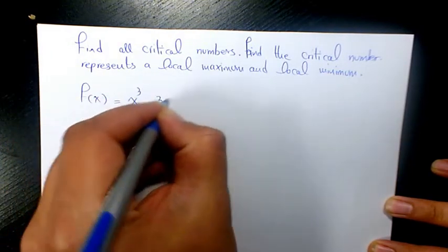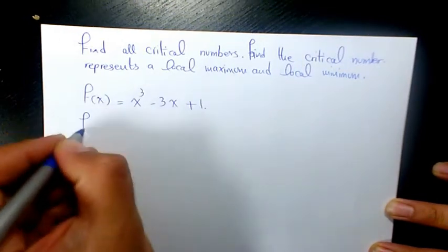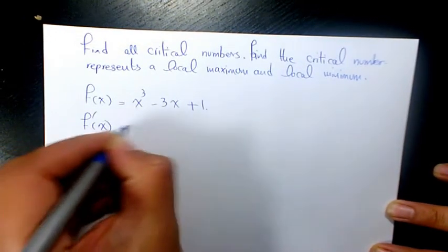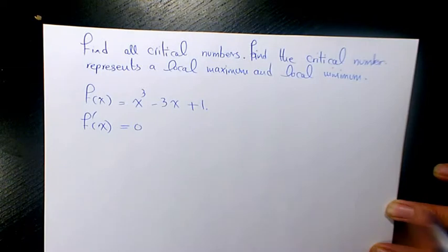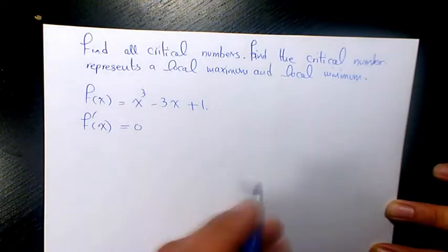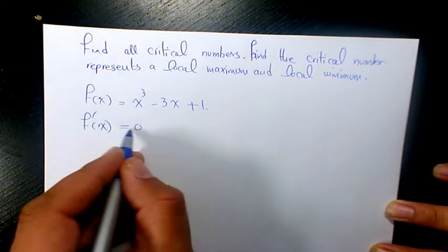minus 3x plus 1. We know critical points where f'(x) is either 0 or undefined. Since we are dealing with a polynomial, it's going to be just f'(x) equals 0.